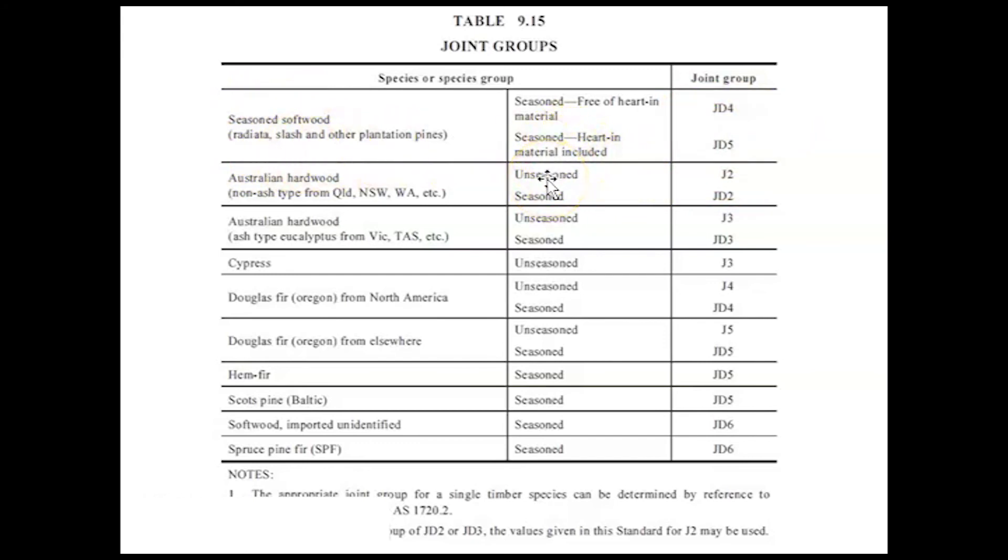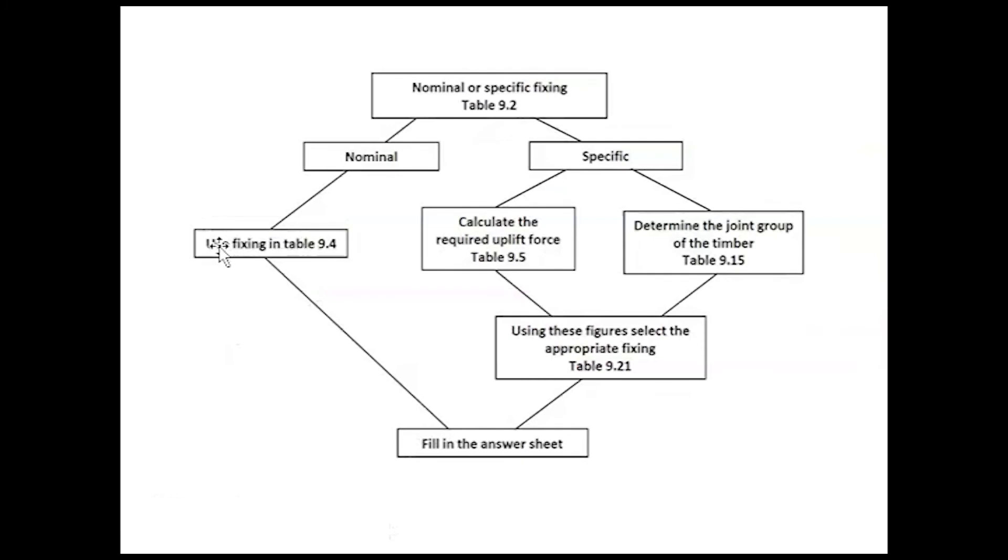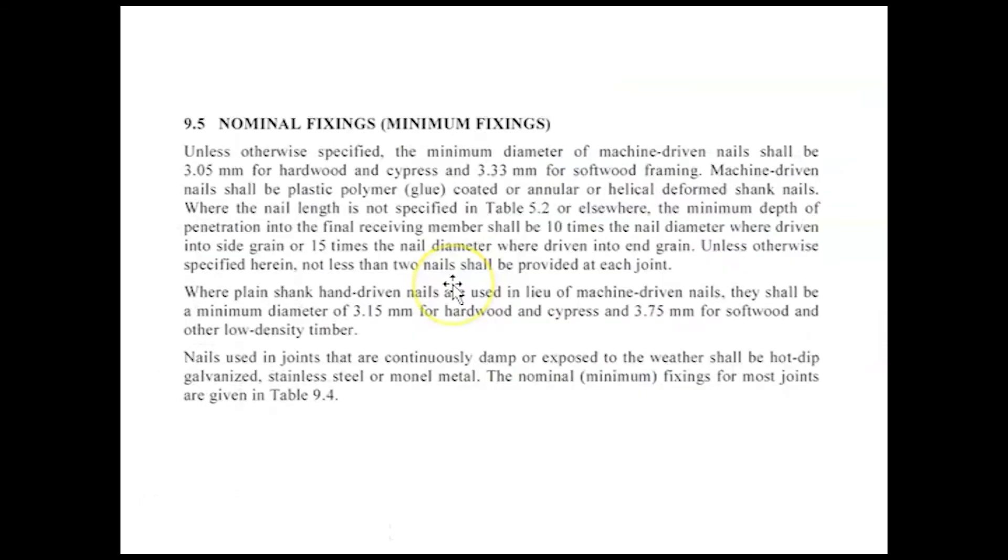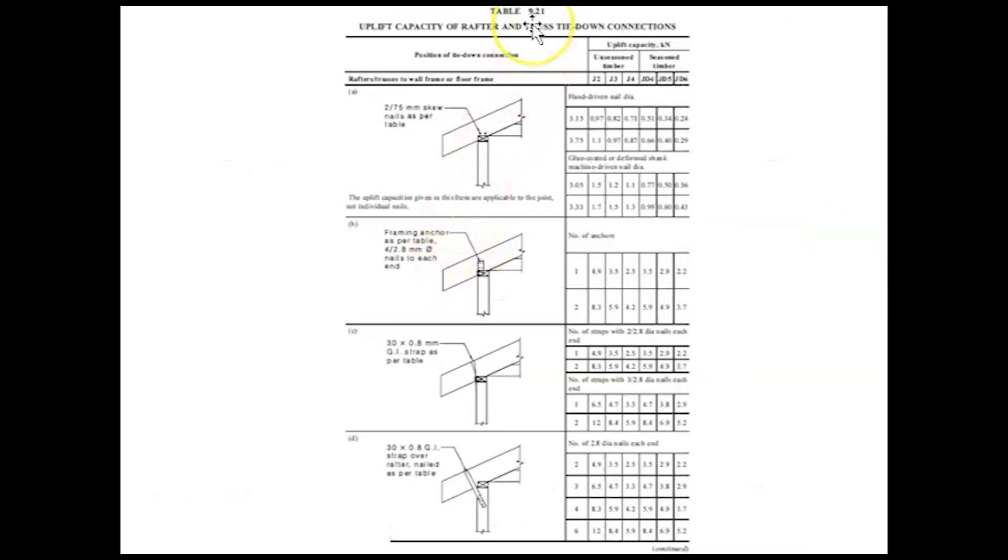All right, now I have my two figures that I need. I have my joint group of JD5, and I have my uplift force of 7.4 kN. So back to my flowchart. I'm going to use these two figures and I'm going to drop down into this table here, Table 9.21. And this is where we're going to choose what we need. So here is Table 9.21. Now it might be a little bit hard to see on the screen. It might be a bit blurry, so I'll talk through this column here, right there. That's my JD5 column. And here's a choice of a number of fixings.